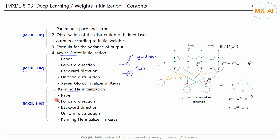In a neural network using ReLU, we will look at how to initialize the weights so that the input signal and gradients can flow smoothly through each layer during forward and backward propagation. This allows us to obtain the optimal variance of the normal distribution for weights initialization, and find the optimal range of the uniform distribution for the initial weights. Finally, we will apply the Kaiming He initializer to a network.